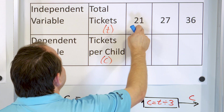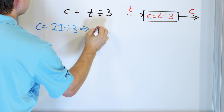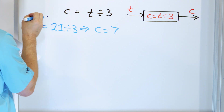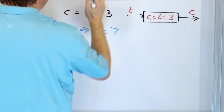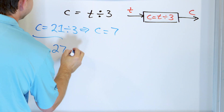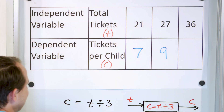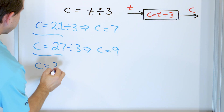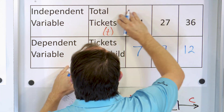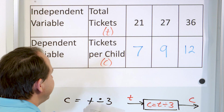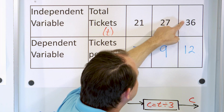When they earn 21 tickets, each child gets 21 divided by three equals seven tickets. When they earn 27 tickets, 27 divided by three equals nine tickets per child. When they earn 36 tickets, 36 divided by three equals twelve tickets each. So on different days: earn 21 tickets and each child gets seven; earn 27 and each child gets nine; earn 36 and each child gets twelve. The input feeds into the function, the calculation divides by three, and the output is tickets per child.